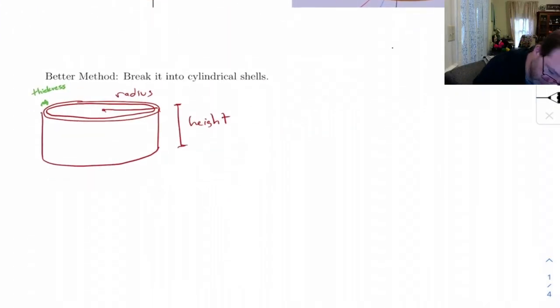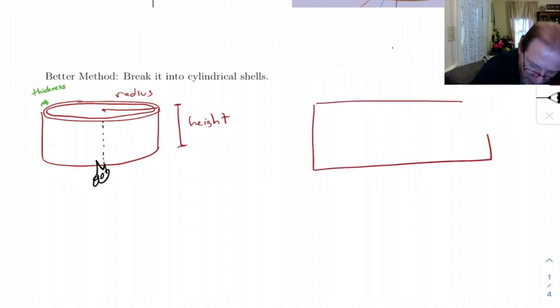So what's the volume of this thing? Well, here's what you want to do, you want to cut it down the middle with a pair of scissors. It's a very bad looking pair of scissors. But you cut it like that, then you flatten it out.